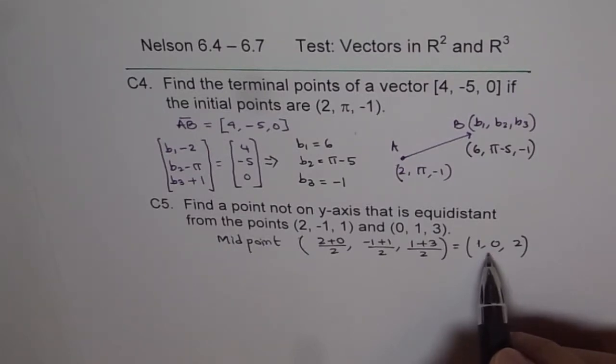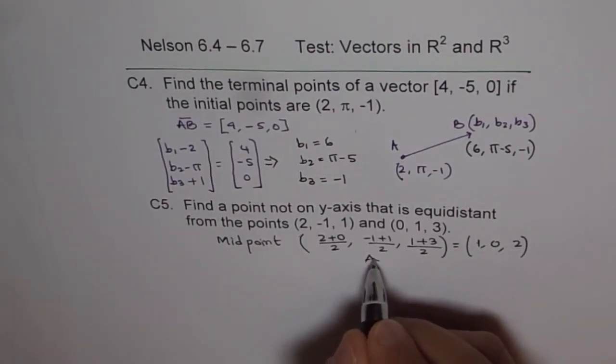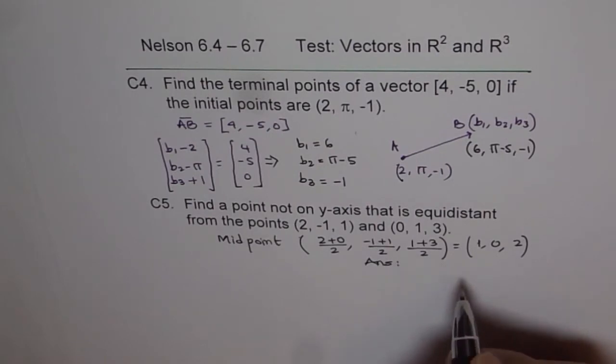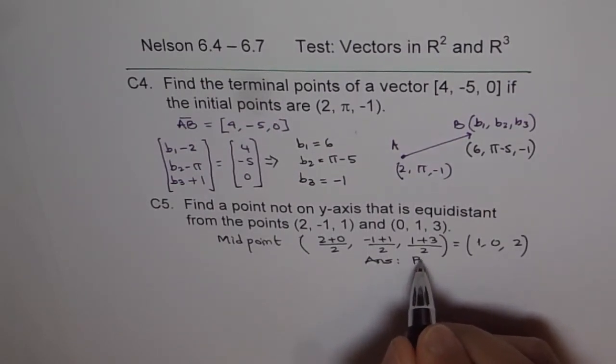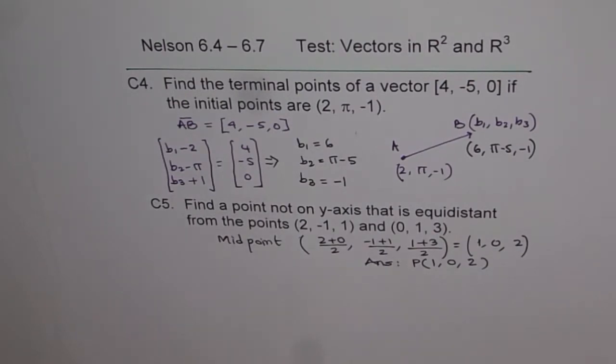It will lie on which plane? It will lie on x-z plane, right? And therefore, our answer is the point equidistant from the given point is, let's say, point P, which is (1, 0, 2). That's how you have to do these questions. Thank you.